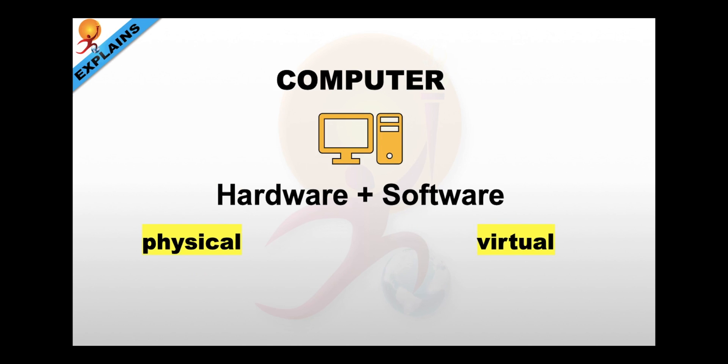So as we have seen so far, a computer requires two things to function properly. The hardware part which is the physical which you can see, touch, feel and software part is the virtual part. That is, it is there but which you cannot see, touch or feel.